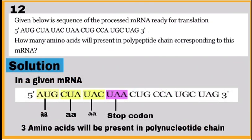Question number 12: Here, three amino acids will be present in the polypeptide chain formed from given messenger RNA because at the fourth position, stop codon UAA is present.